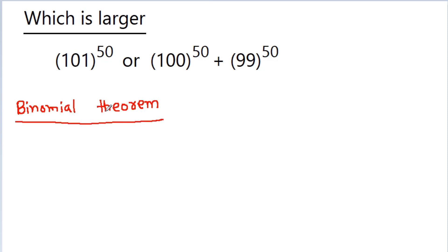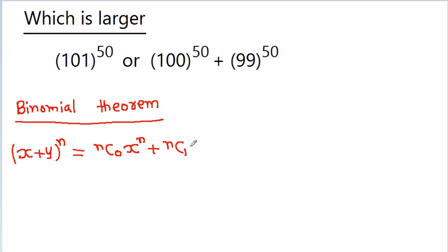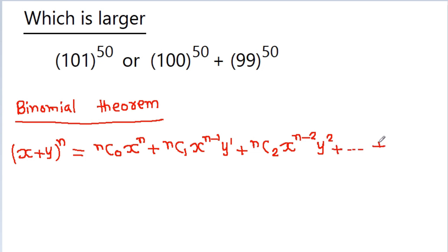According to the binomial theorem, we can write (x + y) to the power n as: nC0 x^n plus nC1 x^(n-1) y^1 plus nC2 x^(n-2) y^2, and so on up to nCn y^n. Now, 101 to the power 50 can be written as (100 + 1) to the power 50.